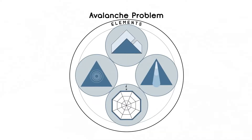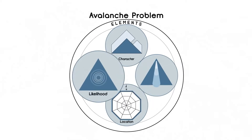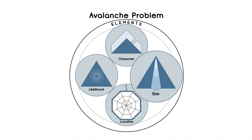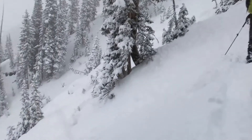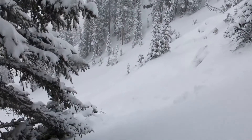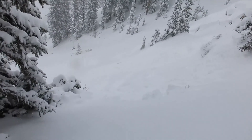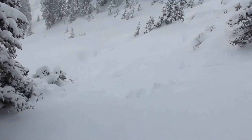This section includes infographics detailing the avalanche character, its spatial distribution, the likelihood of human triggering, and its expected size. The text further describes the characteristics, cause, timing, location, and management strategies for the problem.